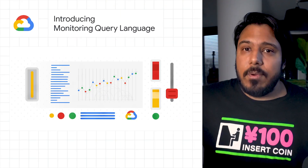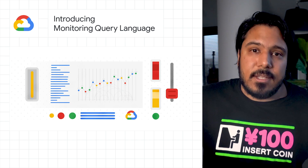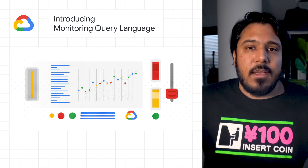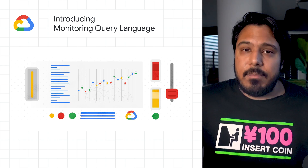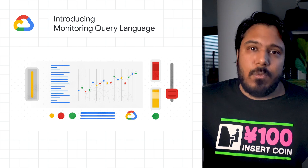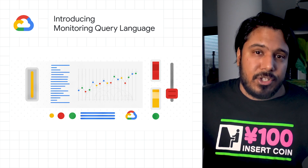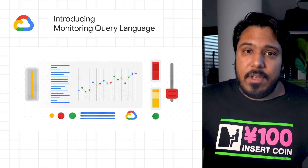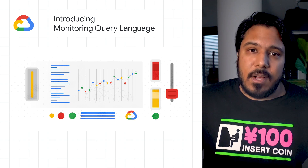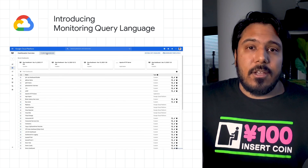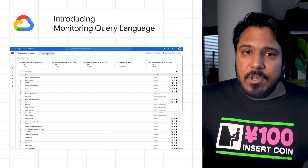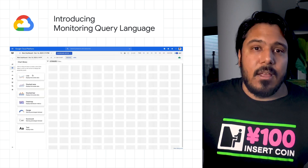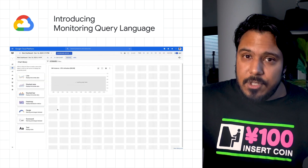Monitoring Query Language in Cloud Monitoring is now generally available. MQL is the same language that powers advanced querying for internal Google production users, and it's now available to Google Cloud users as well. You can use MQL to create ratio-based charts and alerts, and perform time-shift analyses.